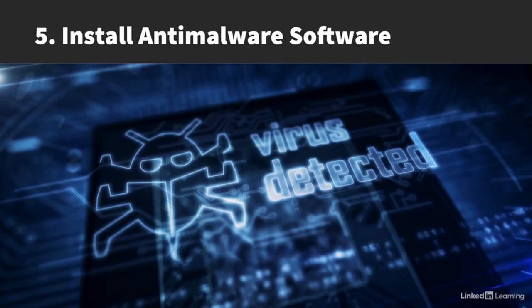Finally, install anti-malware software. No matter how much you try to protect your network and systems, malware can still be introduced by accident if a user becomes a victim of social engineering. That's why it's important to install anti-malware software on all systems and make sure the malware signatures are updated at least daily. By following these security controls, you will be significantly reducing your exposure to malware and ransomware.